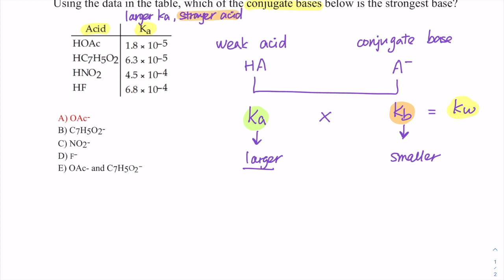If we say larger Ka value means stronger acid, then if you have a stronger weak acid, its conjugate base will be what? Weak, or weaker in terms of comparison.